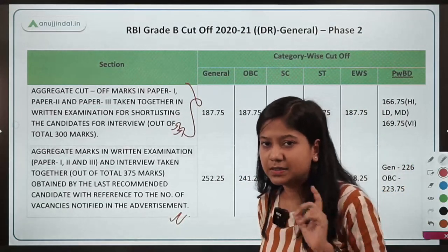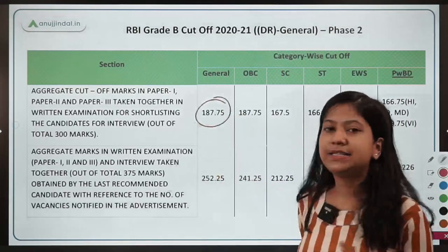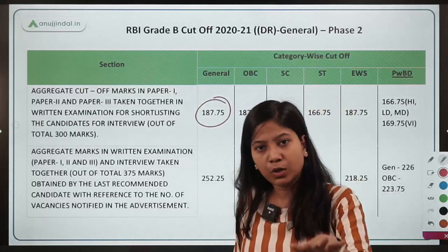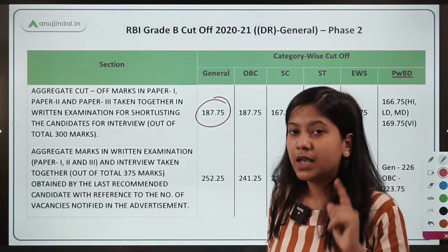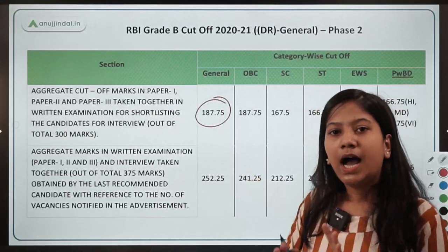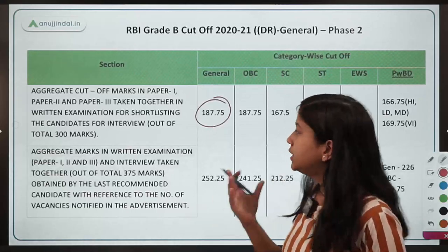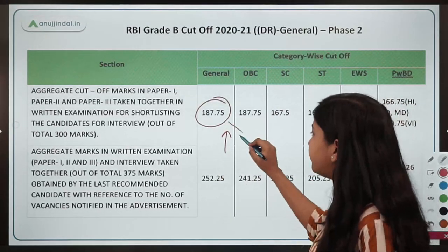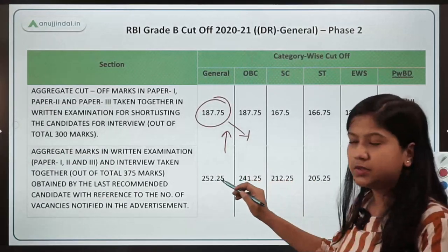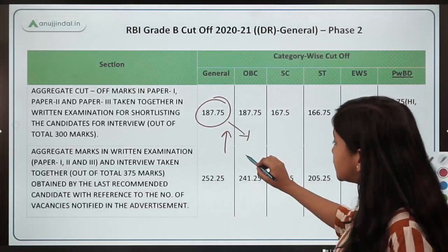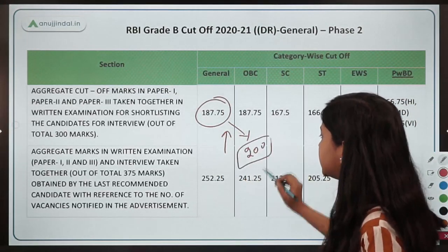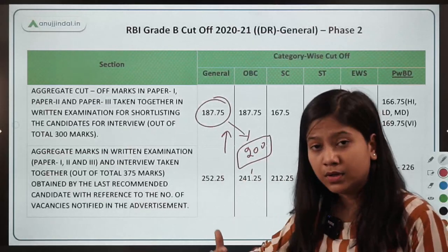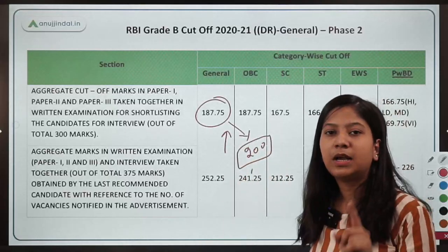What could be the expected cutoff this year? Last year the cutoff was 187.75 when the pattern was new and the level was kept low. Now, with students better prepared and RBI expected to raise the difficulty, the cutoff is likely to go up. For General, EWS, and OBC candidates — whose cutoffs tend to be similar — I recommend keeping a target score of around 200 to be on the safer side.